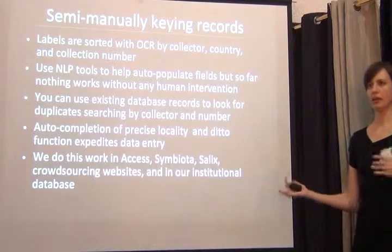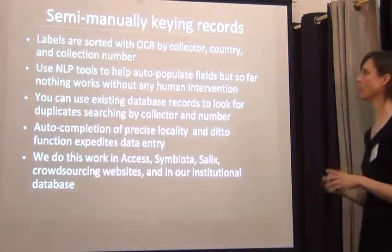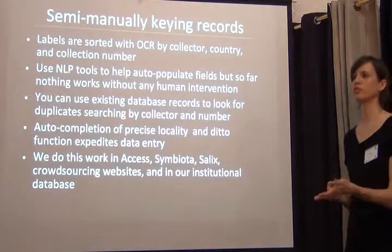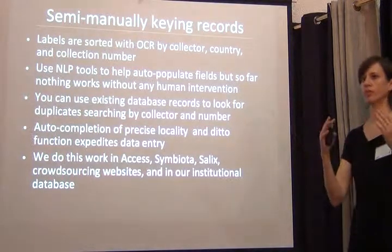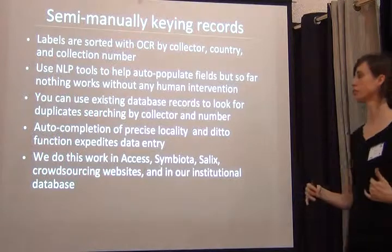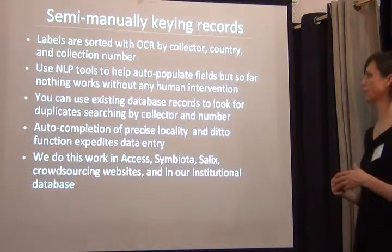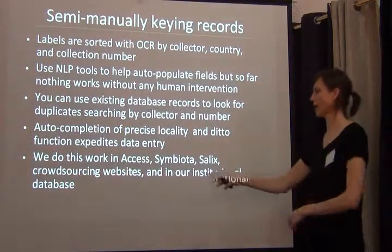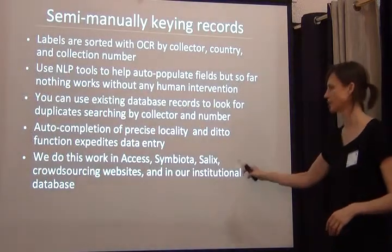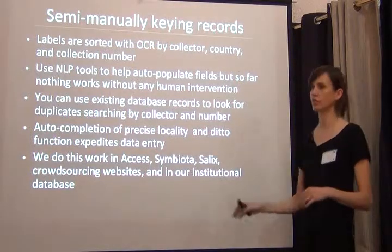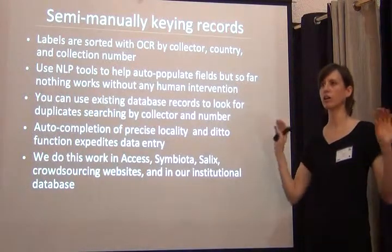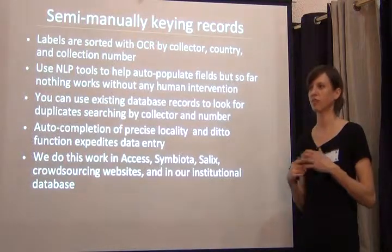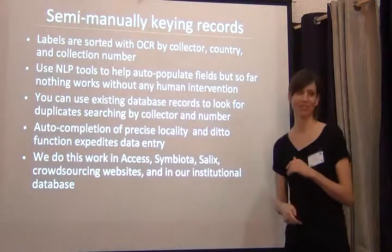This is semi-manual, because we've already sorted with OCR. In some cases we've used natural language processing — a tool like Salix — to break some of that information into fields. We're using existing database records to look for duplicates. We have work being done in Access, Symbiota, Salix, crowdsourcing websites, and our institutional database. As long as we keep identifiers on everything, we can get everything to join back up in the database, but we're looking for help everywhere we can get it.